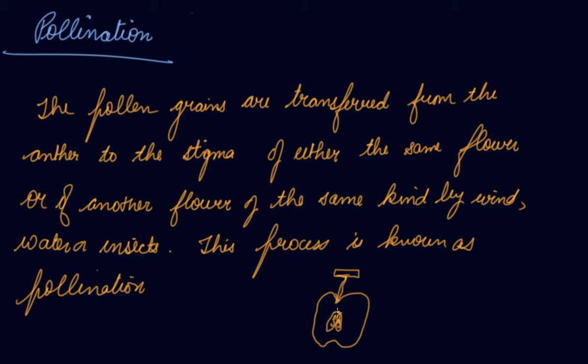Whenever you get a fruit, first you get a flower, and then it turns into the fruit. Similarly, you can see many seeds in mango, lemon, and apple. So the flower is turned into the fruit — this process is known as pollination.